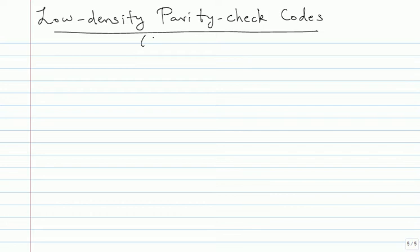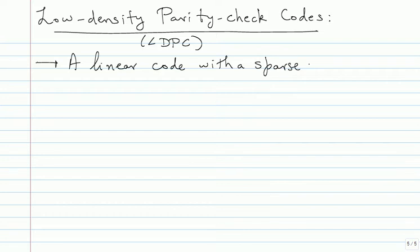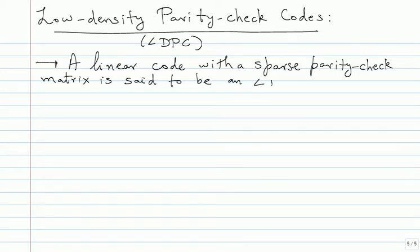With all that background, let us move into low density parity check codes - LDPC codes. I will give you the definition. It will be very surprising - there is really nothing much to define for LDPC codes, not like Reed-Solomon codes. They do not have a specific parity check matrix. A linear code with a sparse parity check matrix is said to be an LDPC code.